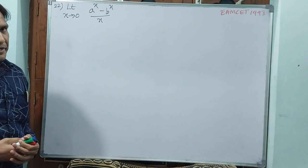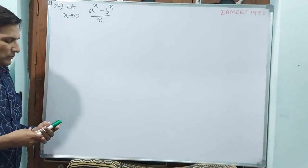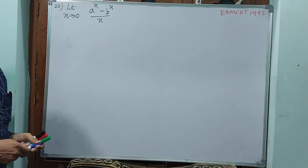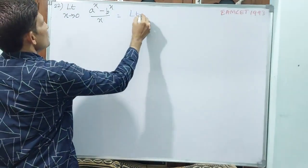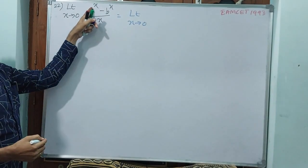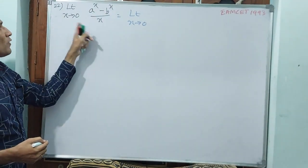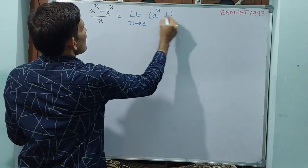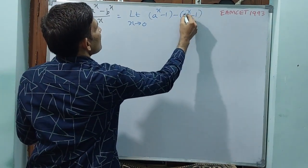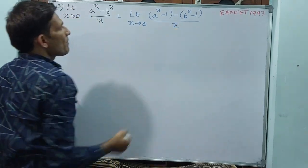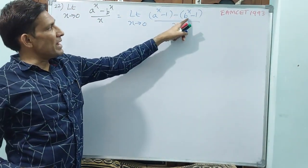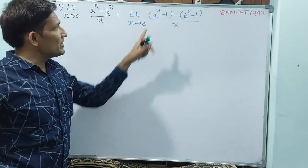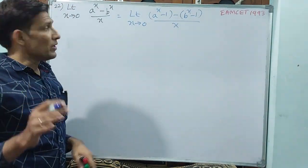Question number 22, M-set 1993. Limit x tends to 0, a power x minus b power x divided by x. Applying directly gives a power 0 minus b power 0 equals 1 minus 1 equals 0, giving 0 by 0 — so we cannot do that. Instead, rewrite as: a power x minus 1, minus b power x minus 1. Opening the bracket, minus b power x plus 1 gives minus 1 plus 1 cancels, leaving a power x minus b power x over x — which is correct.